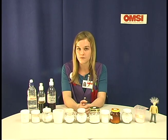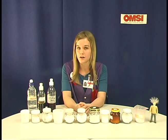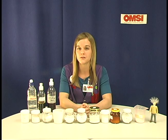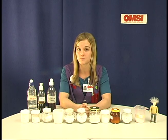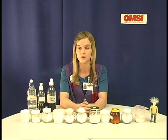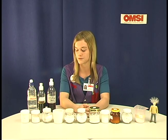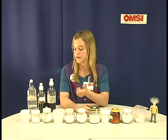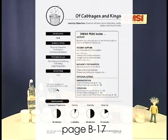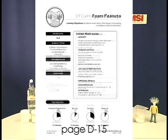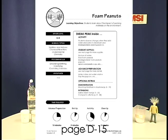It is suggested that you have your students try a couple other experiments before this one so that they are familiar with some of the materials we use here, like for example Cabbages and Kings, where we make cabbage juice as an indicator, and iodine and foam peanuts.